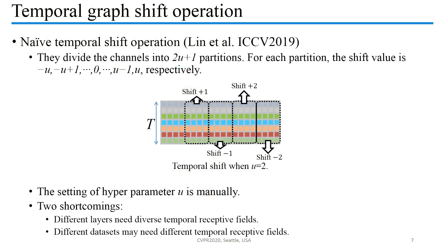For the temporal dimension, we first review the naive temporal shift operation proposed in ICCV 2019, whose receptive field is set manually, which causes two shortcomings. Firstly, different layers need diverse temporal receptive fields, and the exhaustive search of all possible combinations of receptive fields is intractable. Secondly, different datasets may need different temporal receptive fields, which limits the generalization ability between datasets.